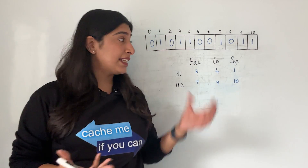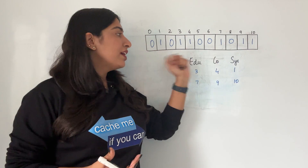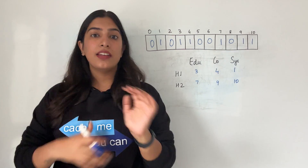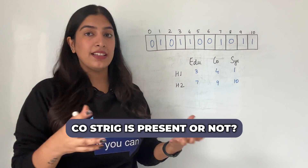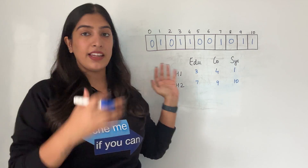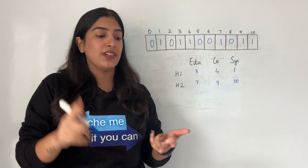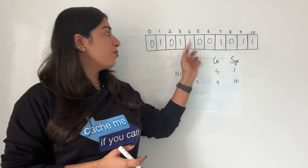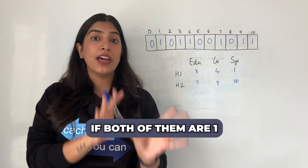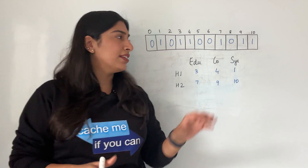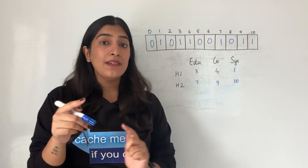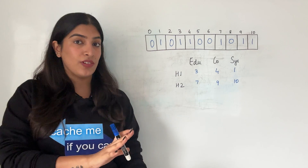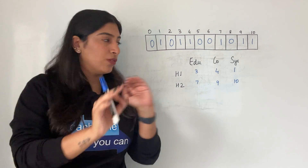What we were doing was visiting strings and adding values to the bloom filter — the bit array. Now suppose I want to check whether the string co is present. I hash it again using the same hash functions, which gives the same indexes four and nine. I check whether both values are one. If both are one, then co may be present. I say 'may be present' — not definitely present. Let's understand why with one more extension.